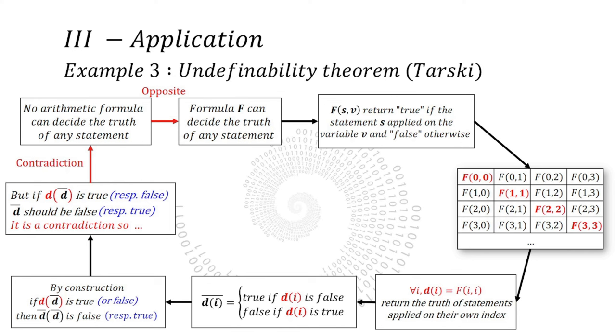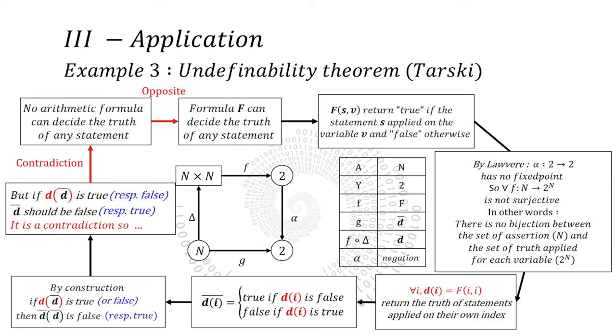And for the last case, I will be brief because this video is already too long. This is very close to the halting problem. Instead of programs, we have arithmetic statements and instead of input arguments, we have variables of statements. N to 2 power N is not surjective by Lawvere. And in other words, it means that there are as many arithmetic statements as there are natural numbers. But there are as many possible mappings between a variable taken by an assertion and returned truth as there are real numbers. This means that no single assertion from a countable set can manage to define the truth of each assertion depending on its variable from an uncountable set.